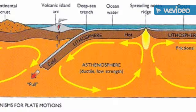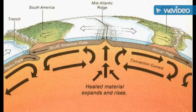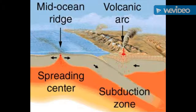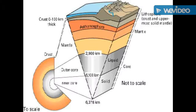A key principle of plate tectonics is that the lithosphere exists as separate and distinct tectonic plates which ride on a fluid-like layer. Plate motions range from about 10 to 44 millimeters per year on the Atlantic Ridge — about as fast as a fingernail grows — to about 160 millimeters per year on the Nazca plate, which is about as fast as human hair grows.